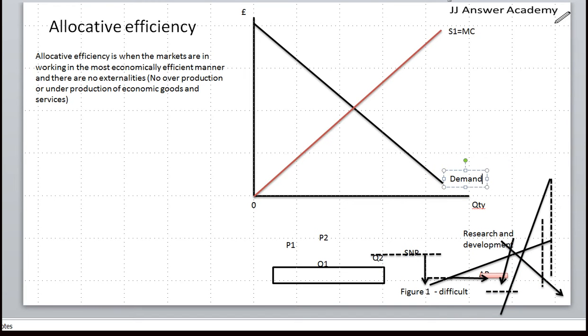The demand curve D, which is also equal to average revenue, and the price where demand curve intersects the supply curve is Q1 and P1.